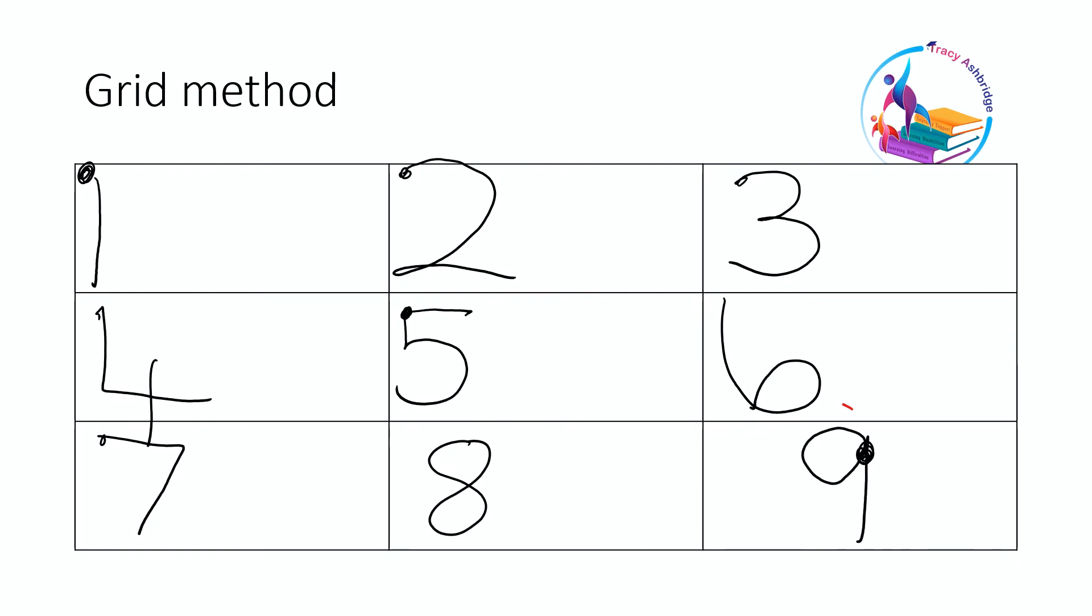So there we've just got naughty nine. Everything else starts in the top left hand corner. Practicing writing them into the grid is a good way of practicing and giving them some strategies to help them remember which way to go.